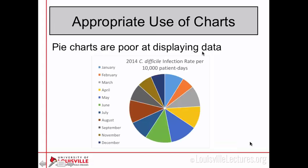Our first option is a pie chart. As you can probably tell, this pie chart does not tell you a lot of information — it doesn't tell you what the actual monthly infection rate is. It only gives you slices of the pie. You could maybe ascertain that some months had higher rates than others and proportionally try to guess that April had twice the rate of February, maybe.